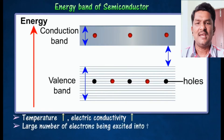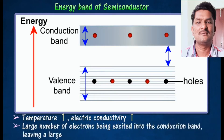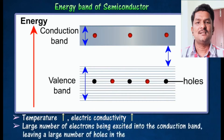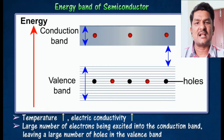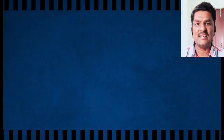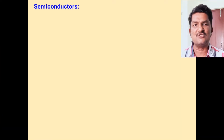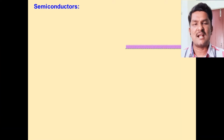As temperature increases, the resistance of a semiconductor decreases and conduction increases, because electrons jump to the conduction band.